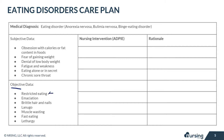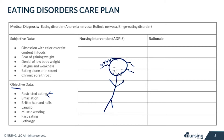Looking at objective data: the patient may be restricting their eating and might not like to eat around people. They may appear emaciated — very, very thin — with brittle hair that breaks easily and nails that break easily. They might even have hair covering their body called lanugo, because the body is attempting to protect itself and retain warmth when the patient is extremely thin.